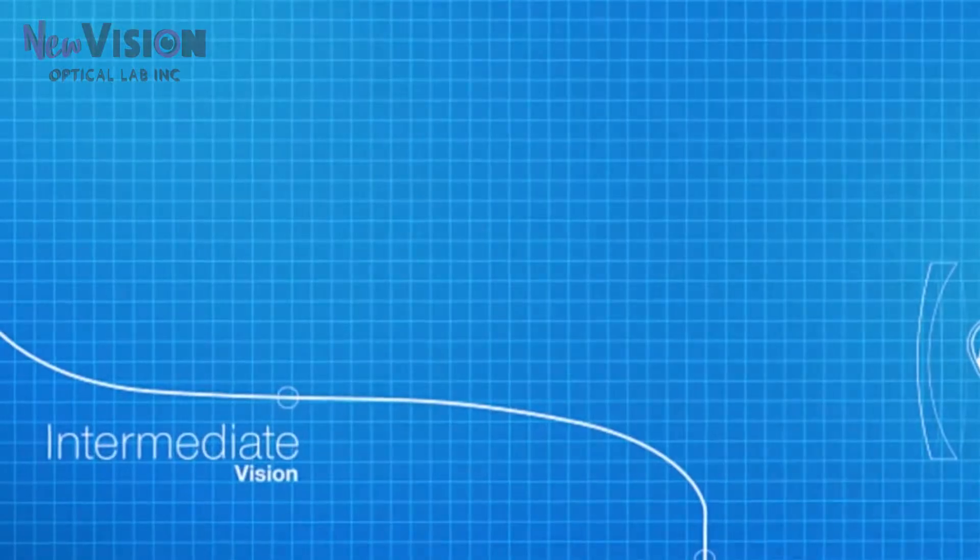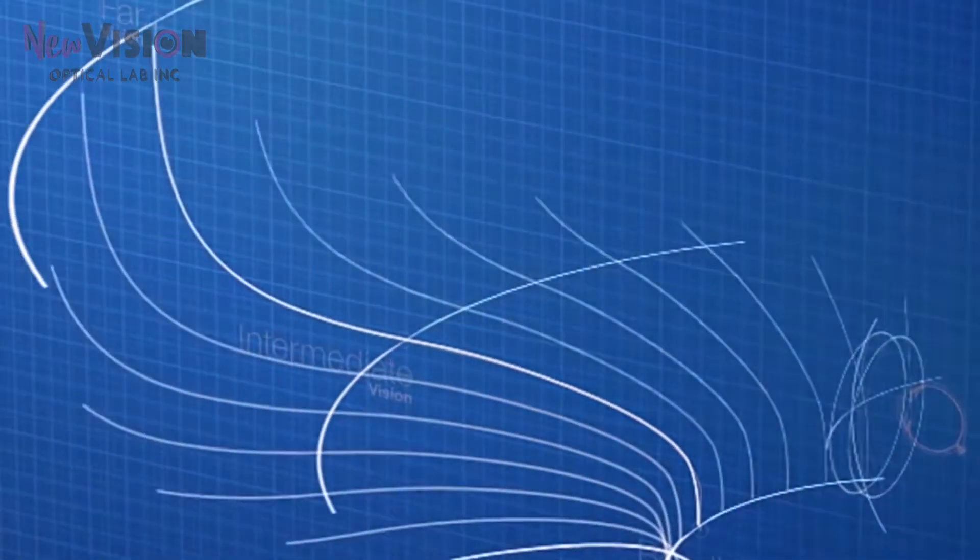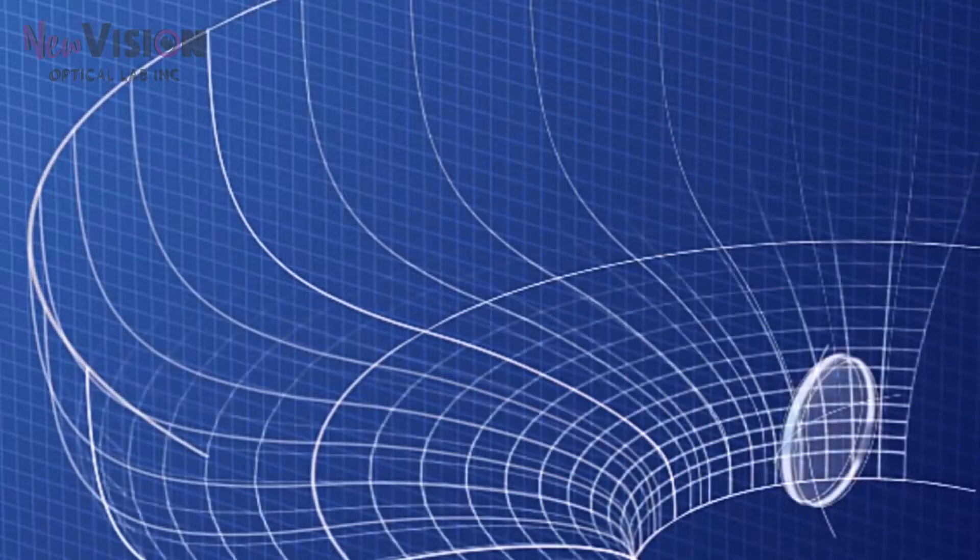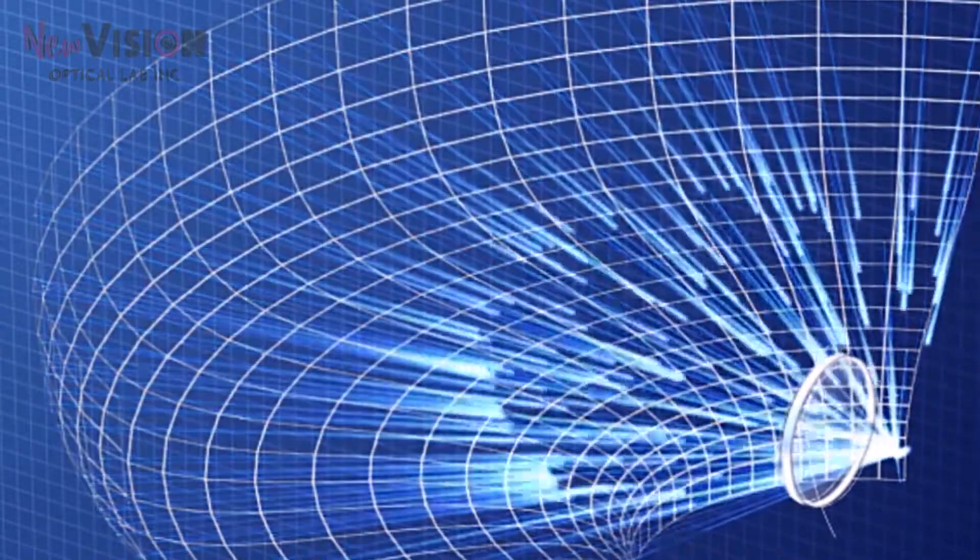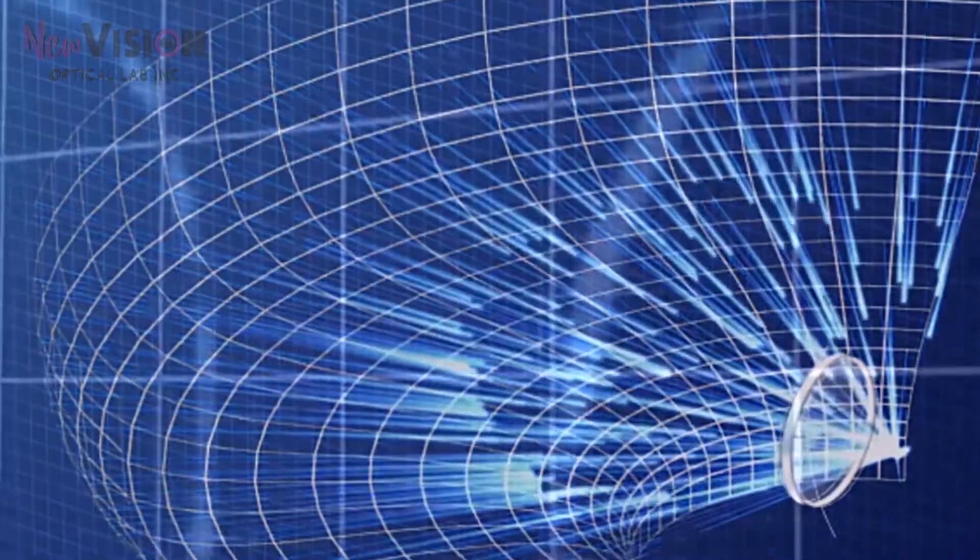The ray tracing method is extended to include the space object. This mathematical model simulates thousands of rays coming from different zones through the front and back surface of the lens, which is optimized during the beam refraction.